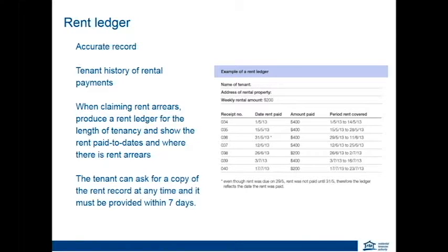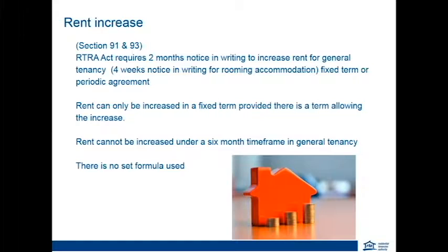The Act requires the lessor agent to give tenants two months' notice in writing to increase the rent for a general tenancy, whether a fixed term or periodic agreement. In a fixed term, you can only increase the rent if there is a term in the agreement allowing it, and you cannot increase rent under a six-month period. The two-month timeframe allows the tenant not just to be informed about the upcoming increase but also to prepare — for example, adjusting a direct bank payment. Just putting a term in the fixed-term agreement is not sufficient; you still need to give the minimum two months' notice in writing.